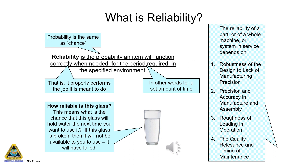Reliability is the measure of how long a thing will last and still be able to provide the service it was originally brought to do. Once a thing cannot fulfill its original purpose it is said to have failed. For example, a pump can still be working and pumping, but if it no longer delivers the pressure and flow that it was installed to do, then it has failed. This is called a functional failure, because it does not provide the function it was installed to do.